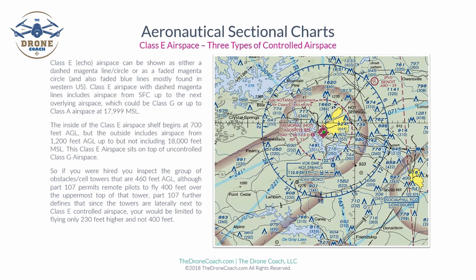There are basically three types of controlled airspace with Class E airspace. Class E airspace can be shown as either a dashed magenta line or circle, as you can see in this sectional chart. It can also be shown as a faded magenta circle or line, and also faded blue lines in the western United States. On the inside of this faded magenta Class E airspace, the airspace begins at 700 feet AGL and extends up until it runs into the next overlying airspace, which could be Class A airspace, all the way up to 18,000 feet. So this Class E airspace could start at 700 feet AGL and extend all the way up to 17,999 feet.